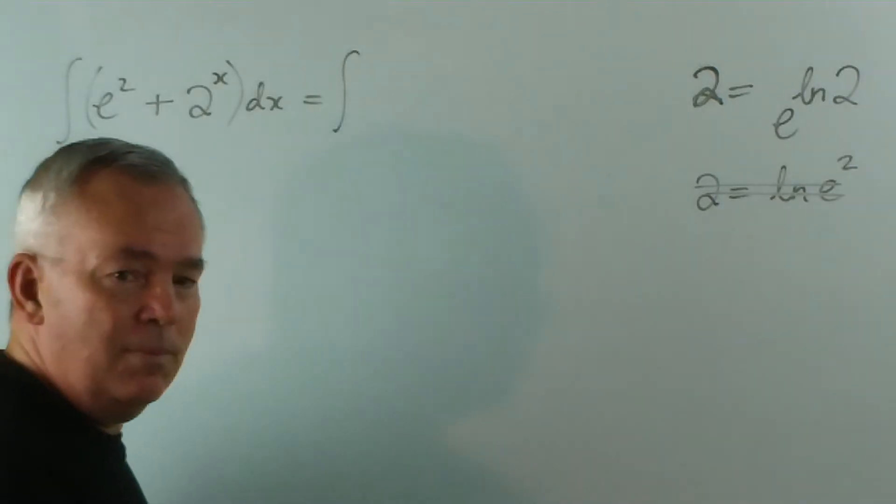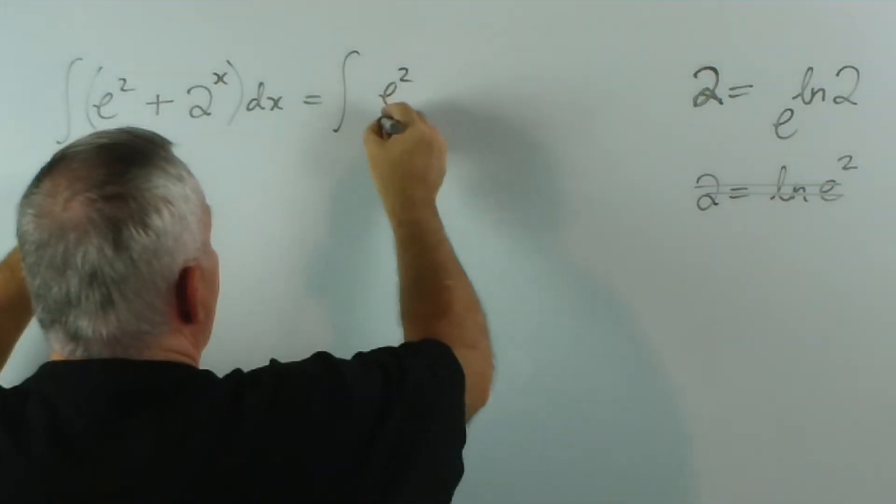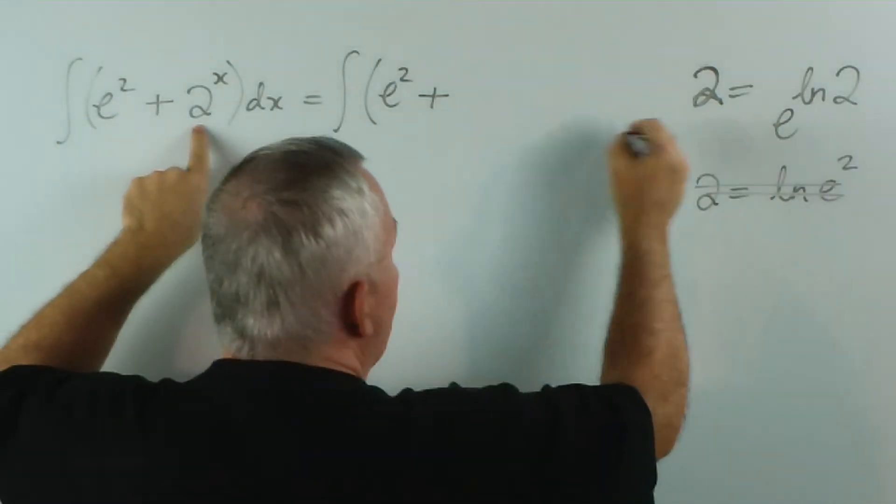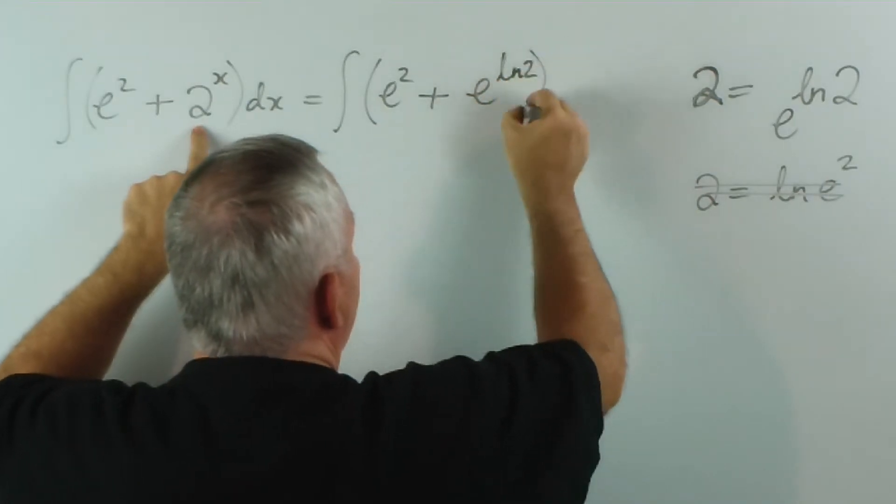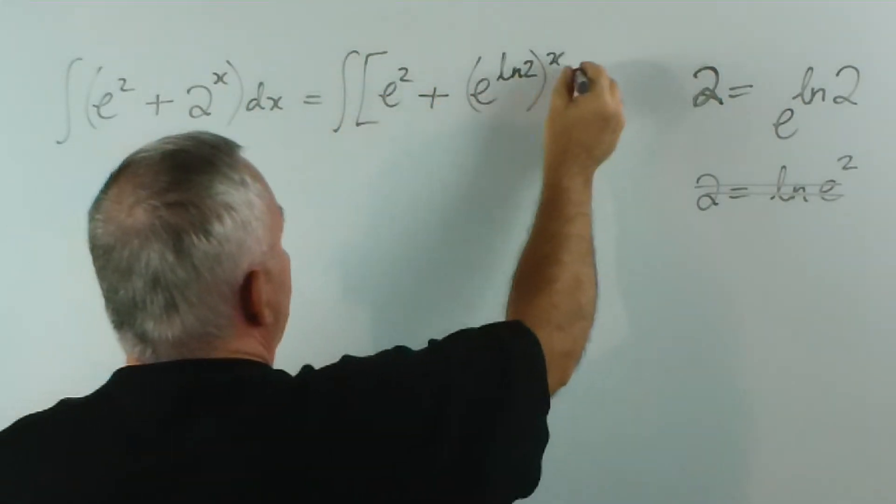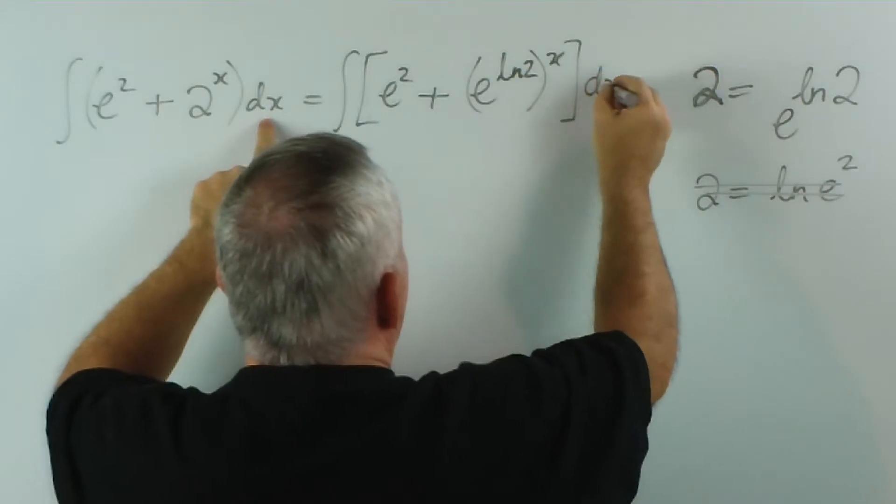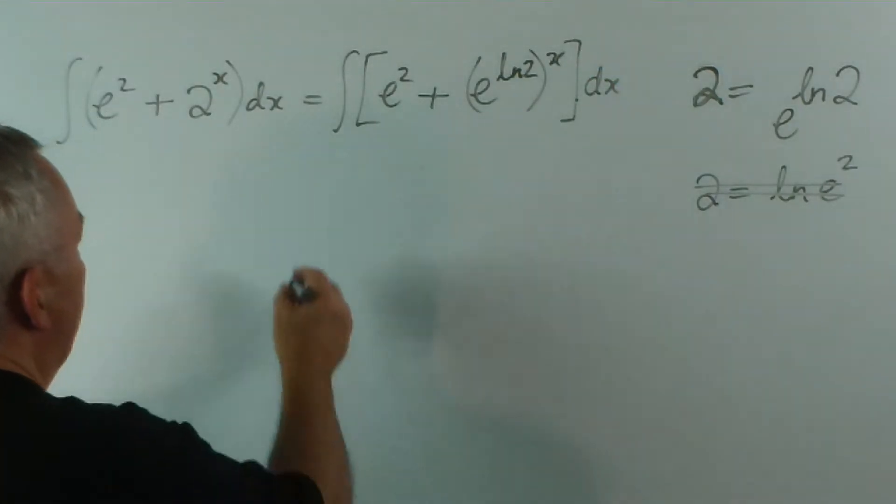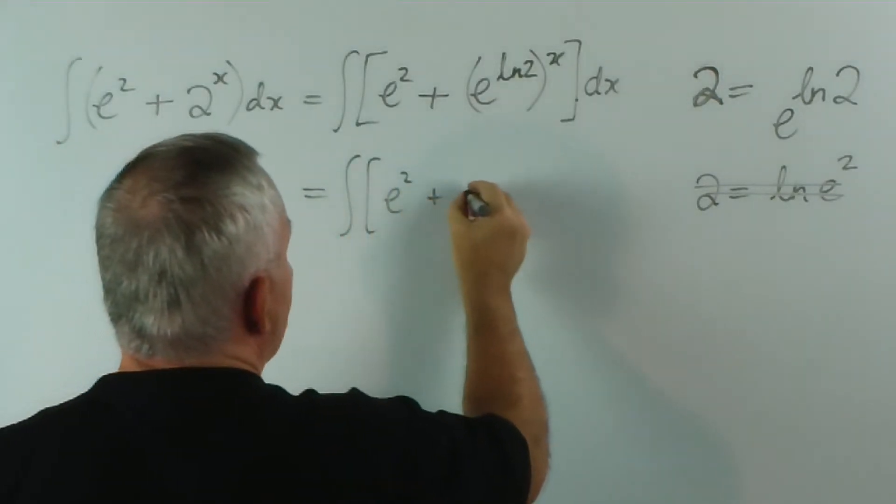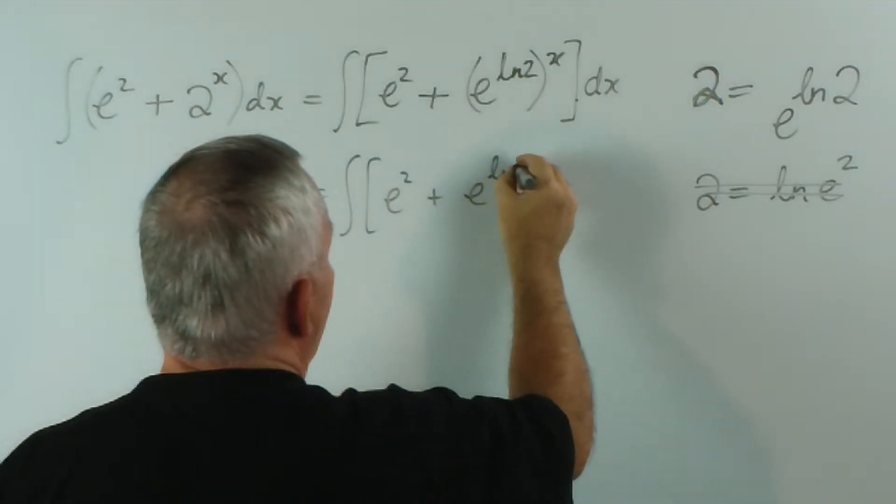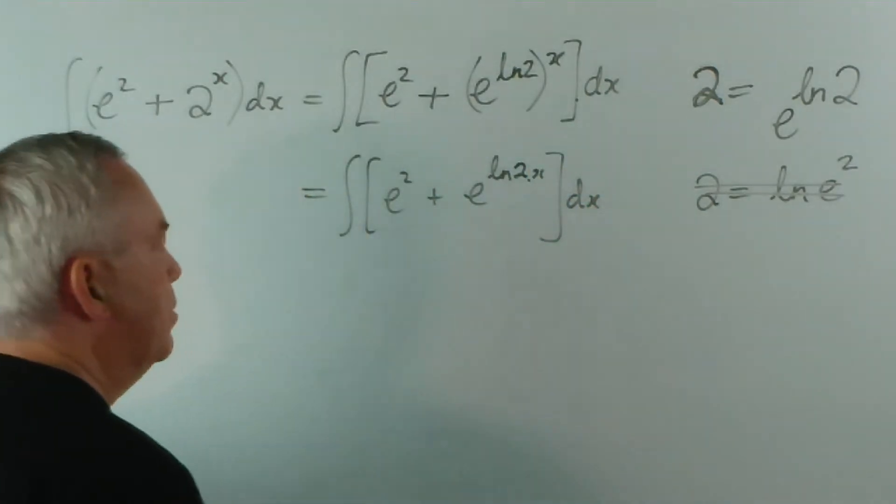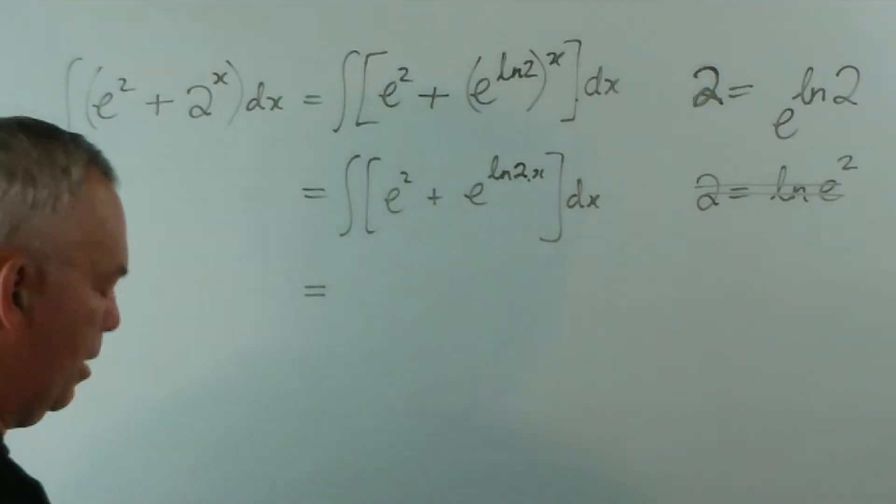So, let's make this step. e squared I'm just not going to bother with, because it's just a number. But the 2 I'm going to replace with e to the log 2 to the power x. Now, I should use brackets here, dx times dx. And this will give us, if we just simplify it a little bit, e squared plus e to the log 2x times x dx equals...